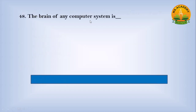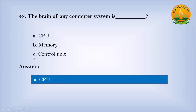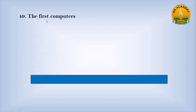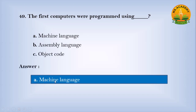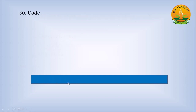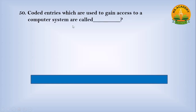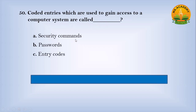The brain of any computer system is — option A: CPU, option B: memory, option C: control unit. Answer: A — CPU. The first computers were programmed using — option A: mechanical language, option B: assembly language, option C: object code. Answer: A — machine language. Coded entries used to gain access to a computer system are called — option A: security commands, option B: passwords, option C: entry codes. Answer: B — passwords.